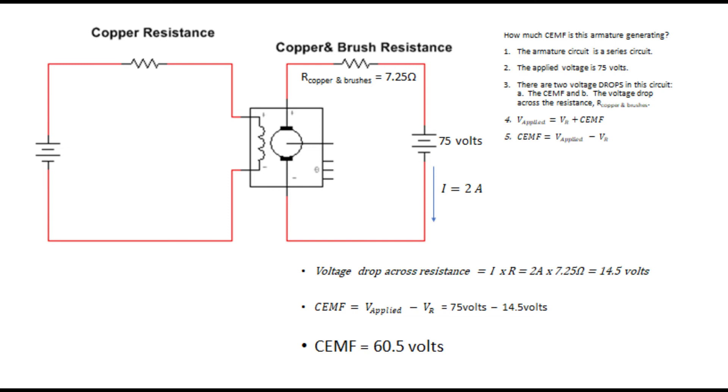You'll notice that we have an applied voltage to the armature of 75 volts. It's DC. We have two amps flowing in the armature. And the resistance of the copper and the brushes of the armature is 7.25 ohms. And I'm asking you to calculate the counter-EMF.